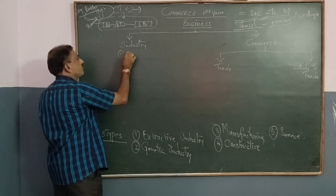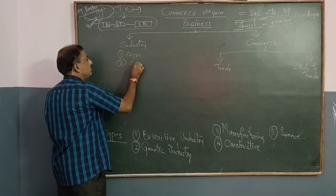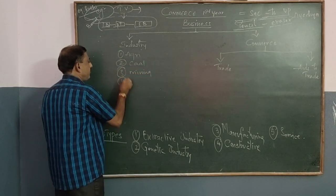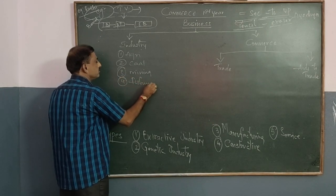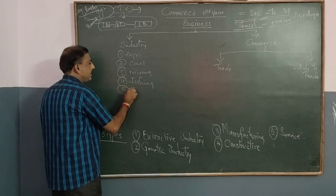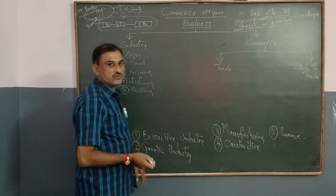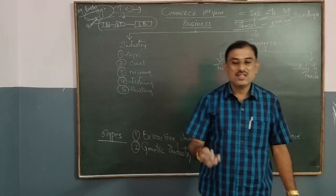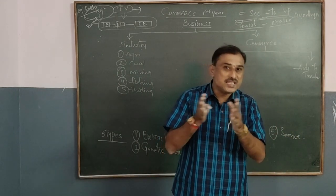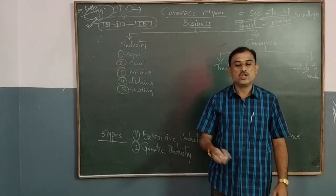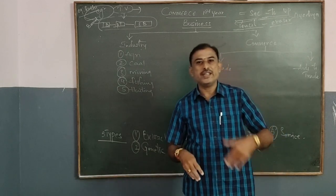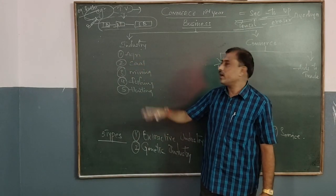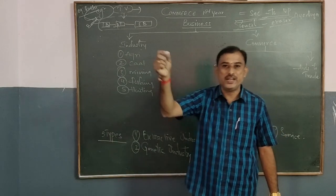Agriculture is the supreme industrial sector in India, as you know very well from your economics subject. Agriculture is a type of industry where it provides several types of goods which are obtained by human beings for their consumption — like rice, pulses, oil, flowers, and vegetables — which are produced on the surface of the earth by doing agricultural activities.